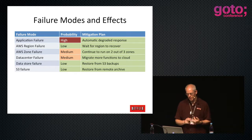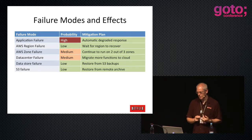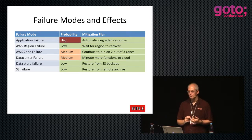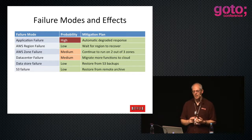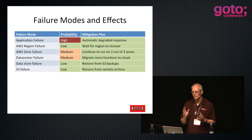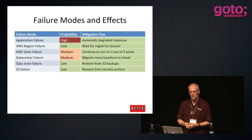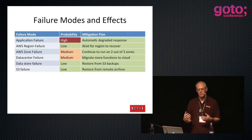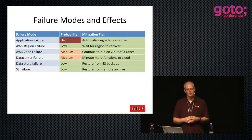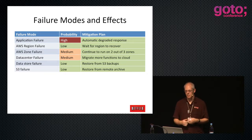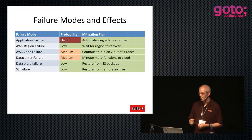Region failure: it's happened occasionally - there was a routing error which black-hole routed all of US East for about half an hour. Every outbound packet could not leave; you could send traffic to it but never got anything back - a total region outage. But as soon as they fixed the routing, everything came back and no machines were harmed. That's really the only region-level outage we've seen.